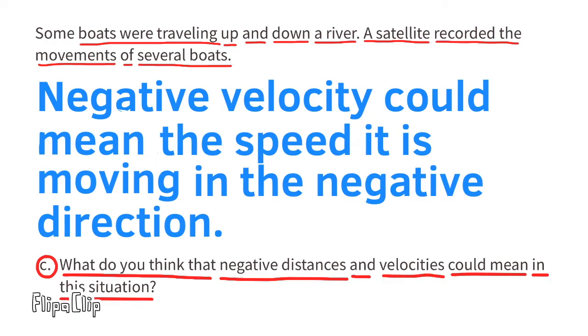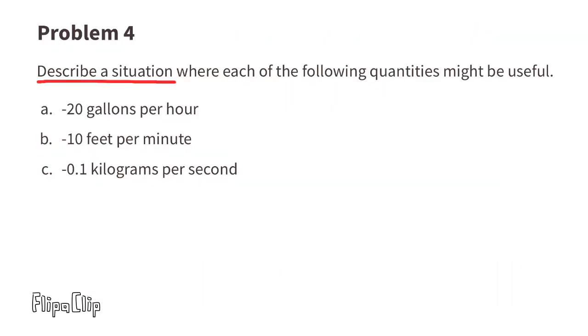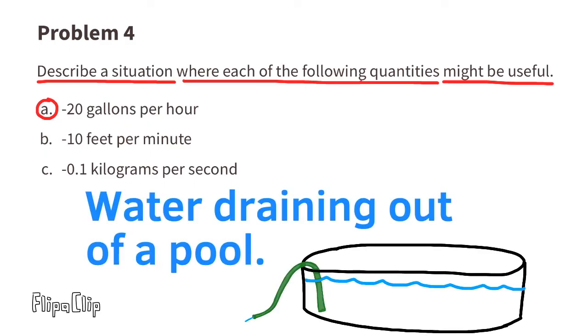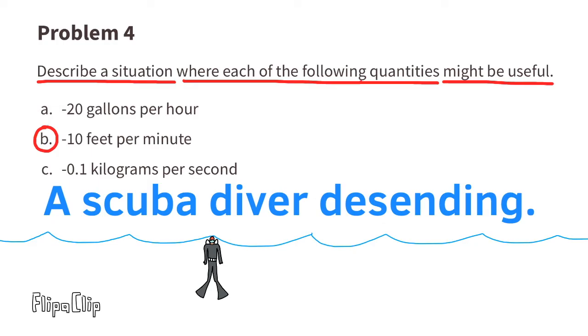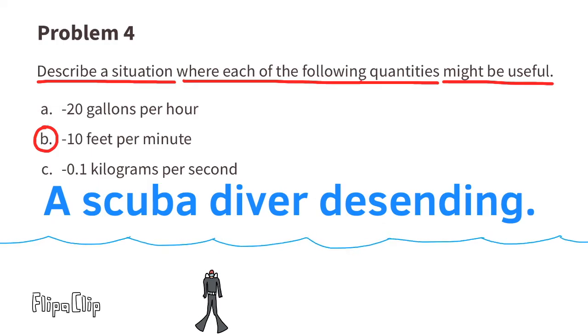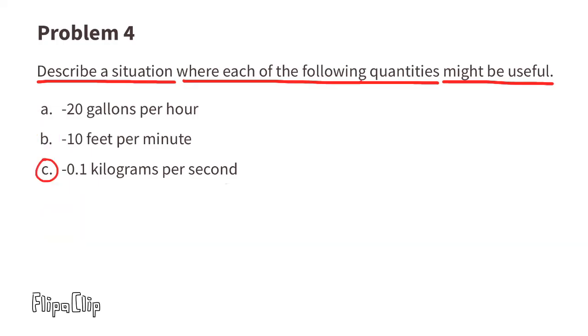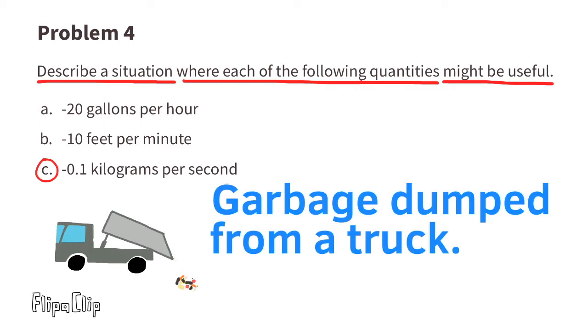Problem number four: Describe a situation where each of the following quantities might be useful. Part a: negative 20 gallons per hour. That might represent water draining out of a pool. Part b: negative 10 feet per minute. That might represent a scuba diver descending. Part c: negative 1/10 kilograms per second. That might represent garbage dumped from a truck.